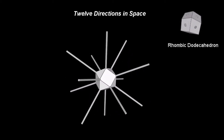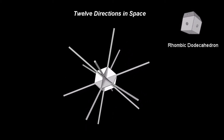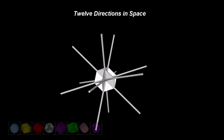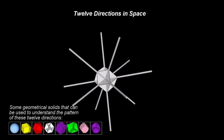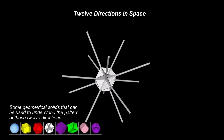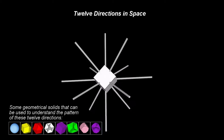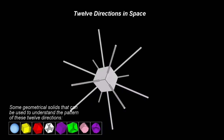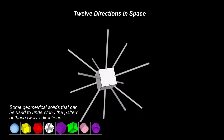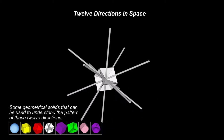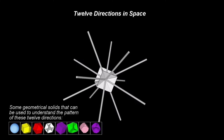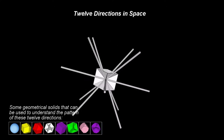Other shapes which obey this pattern can also be used to visualize these directions. For example, let's look at the cuboctahedron first. The cube, the truncated cube, and a few other solid shapes also have this symmetry pattern.